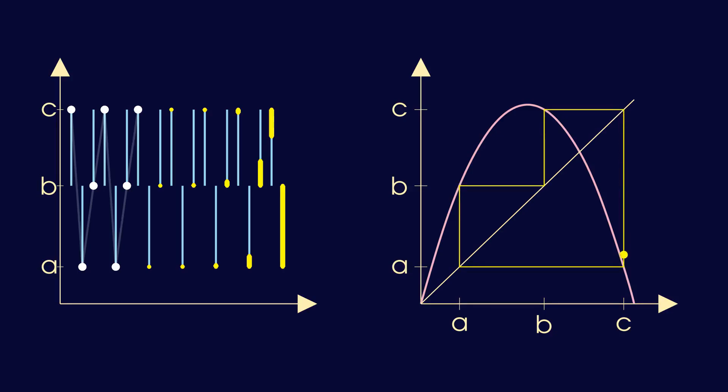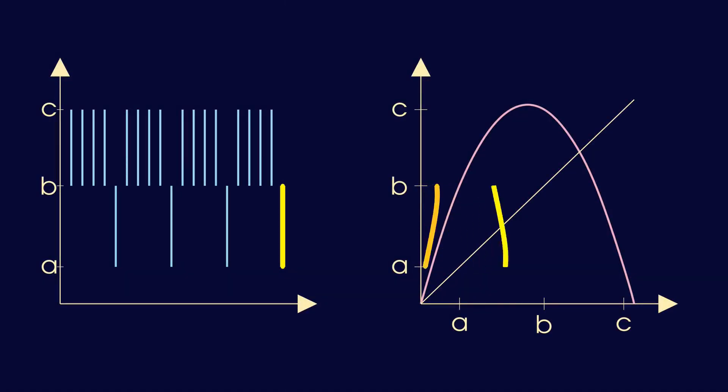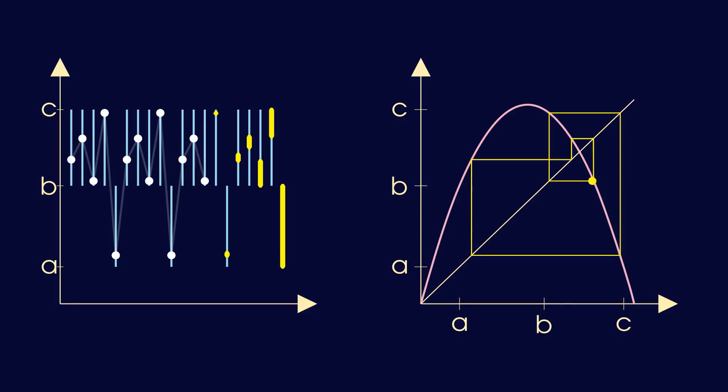And in the same way we can construct solutions of period 4, period 5, shown here, and so on. The only information that we have used here is the existence of a three-periodic solution. Its values a, b and c define two intervals, and moving backward in time through a barcode made up of these intervals, we can construct n-periodic solutions for any positive integer n. This is what we wanted to show. If a three-periodic solution exists, then solutions of any period exist.